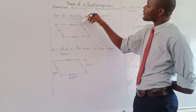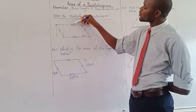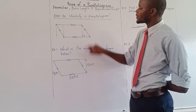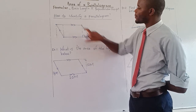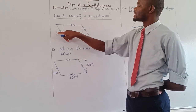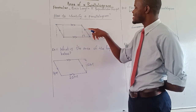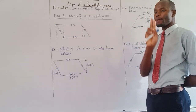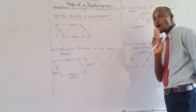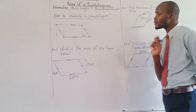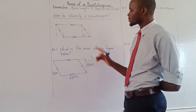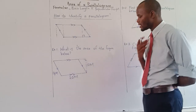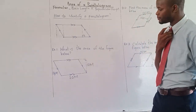It has two pairs of parallel lines. This line and this one, they are parallel — so this is one pair. This line and this one, they are parallel — this is another pair. So it has two pairs of parallel lines. That is how you identify a parallelogram.